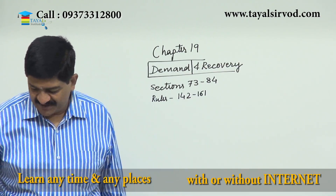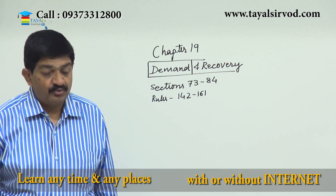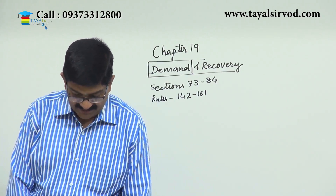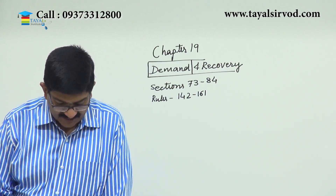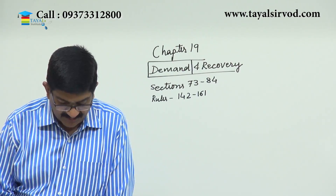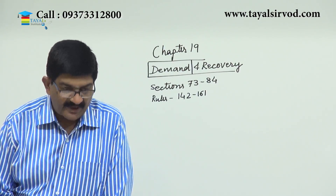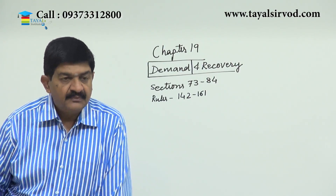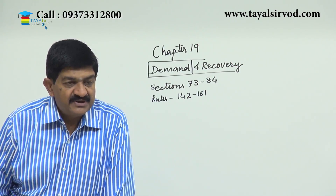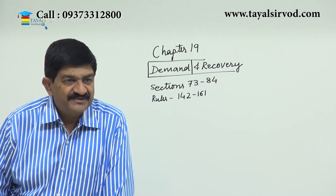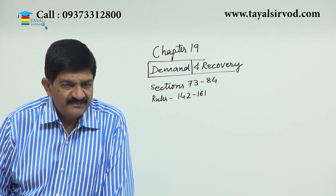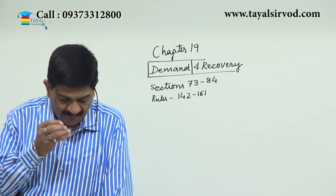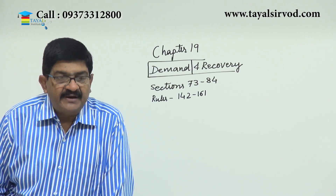Now once you have completed the chapter, what is expected from you to know is given in the learning outcomes. Number one: understand the provisions relating to determination of tax not paid or short paid. Not paid, short paid — it means these are already assessed but still not paid to the government.